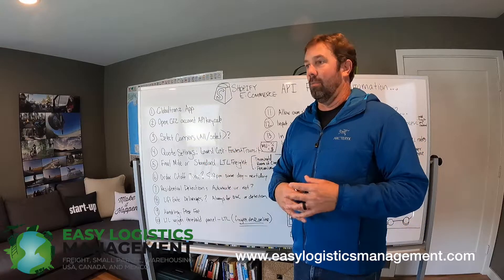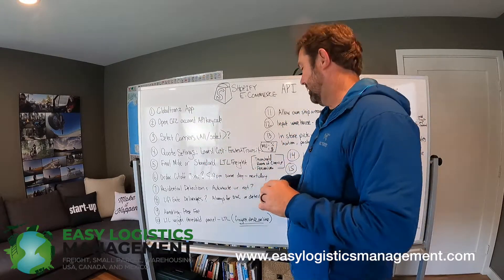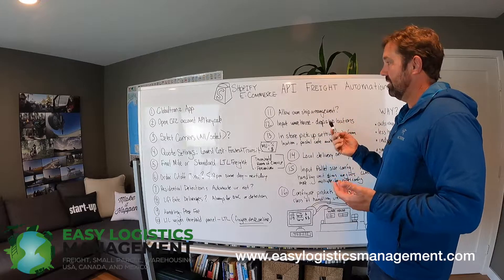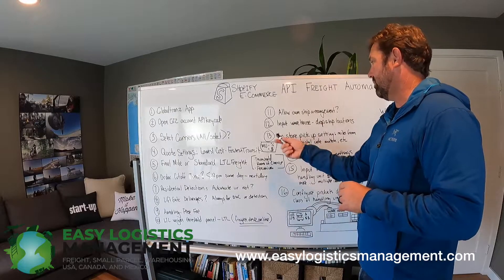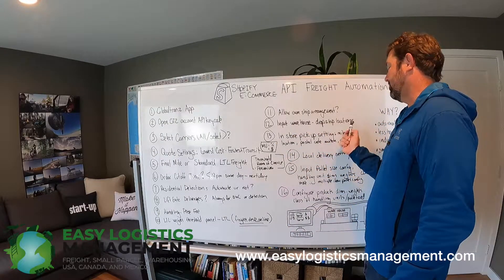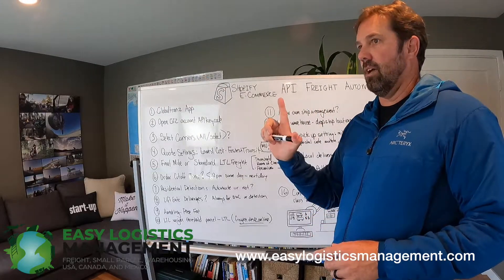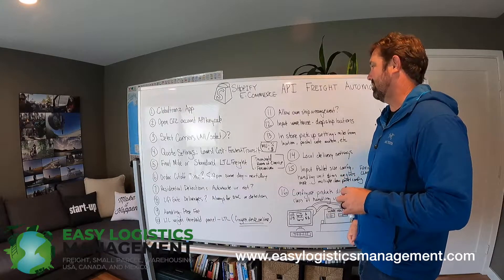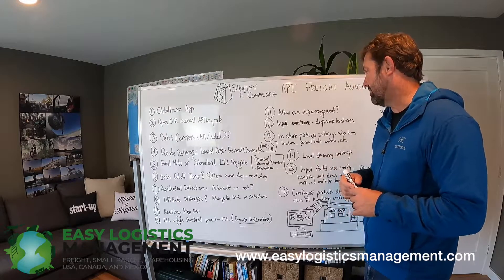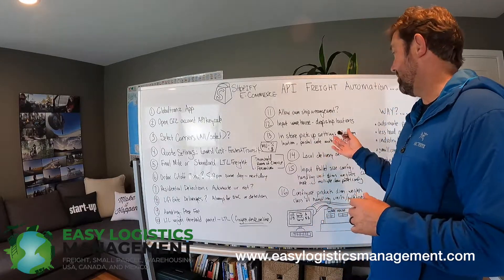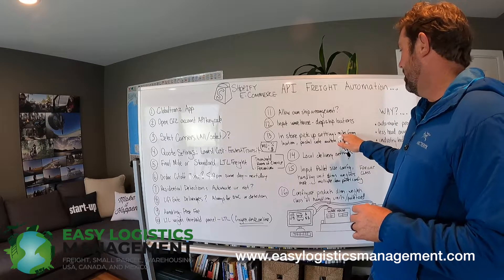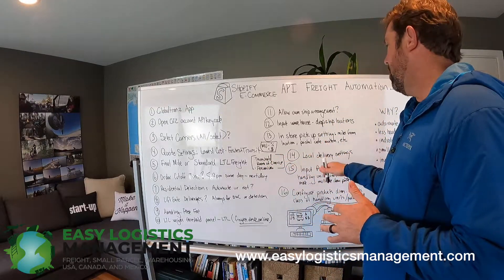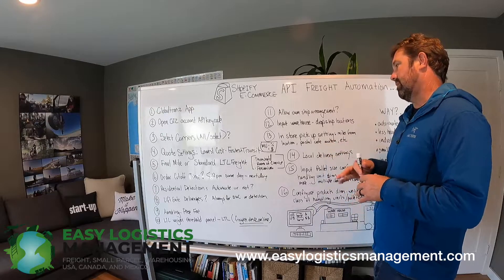It's pretty exciting — it automates all the shipping documentation that you would need. Definitely give me a call if you want to learn more about that product. Number eleven, allowing your clients to arrange their own shipping, if that's an option for you — it gives you the flexibility to do that. Number twelve, inputting your different warehouse and dropship locations. By default it's one location, but you can add different proprietary warehouse and dropship locations in the Shopify freight shipping app. Number thirteen, in-store pickups — if you have retail locations, it offers flexibility for that, configured based on miles from the location or postal code matching.